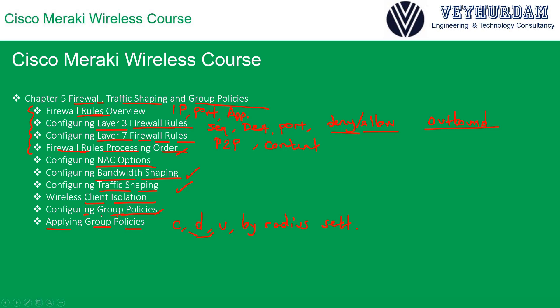We will go through different examples for group policy configuration. To recap the course: we start by understanding the Meraki wireless solution, then cover wireless terms, best practices, and RF profiles, followed by channel configurations, auto channeling, and band steering.